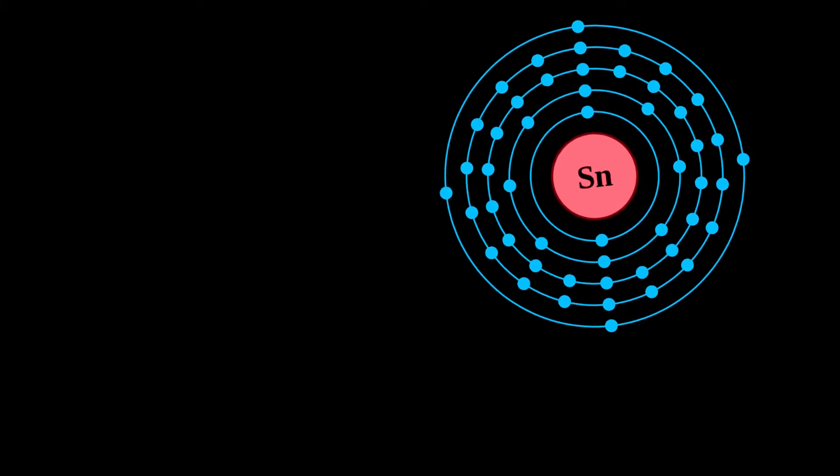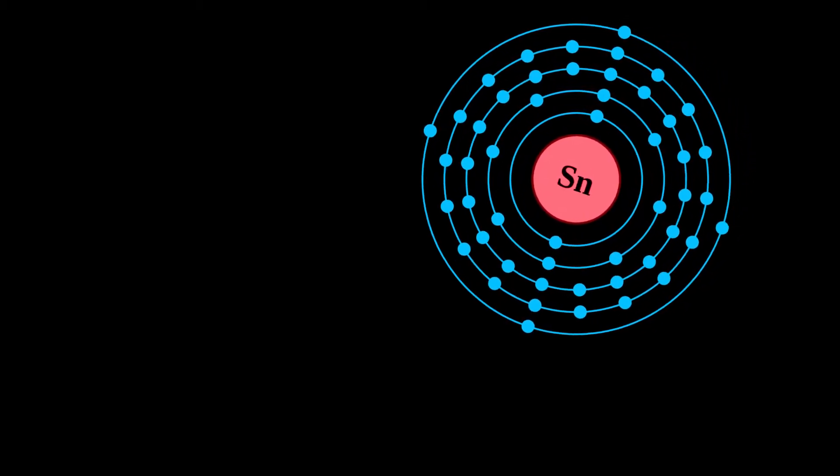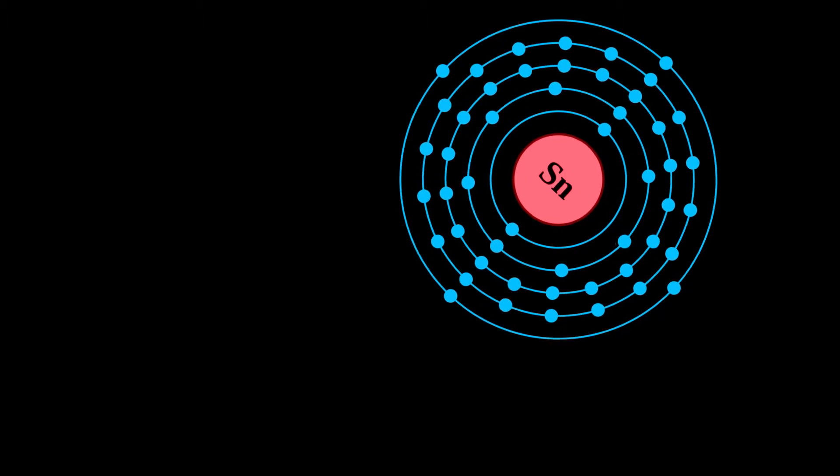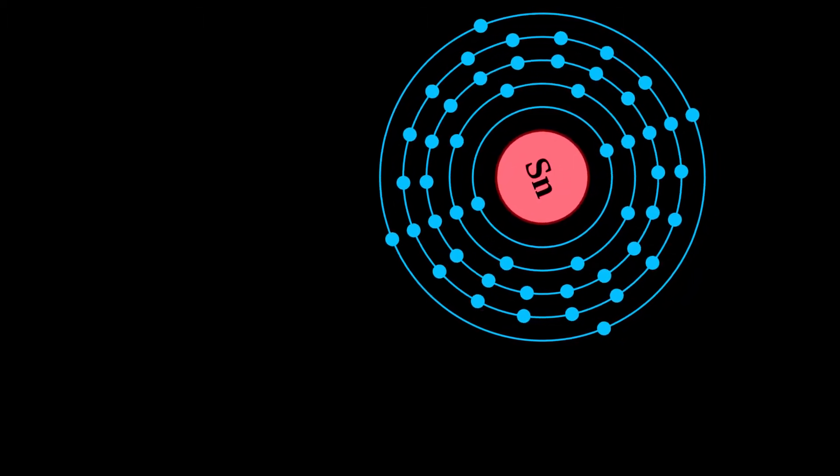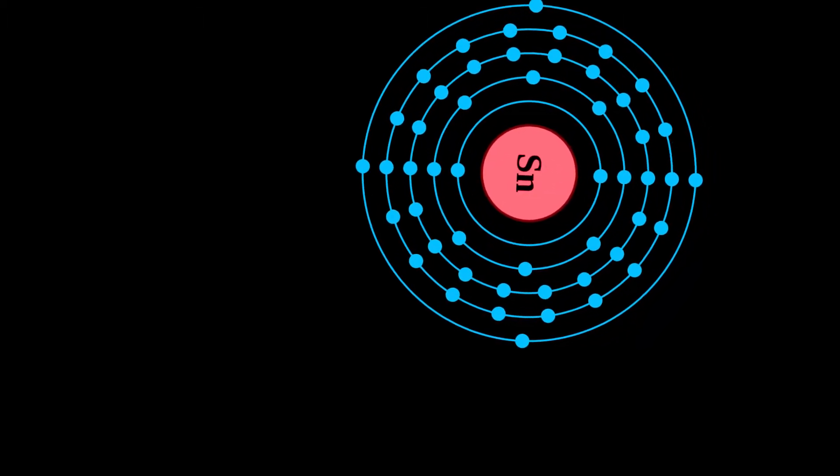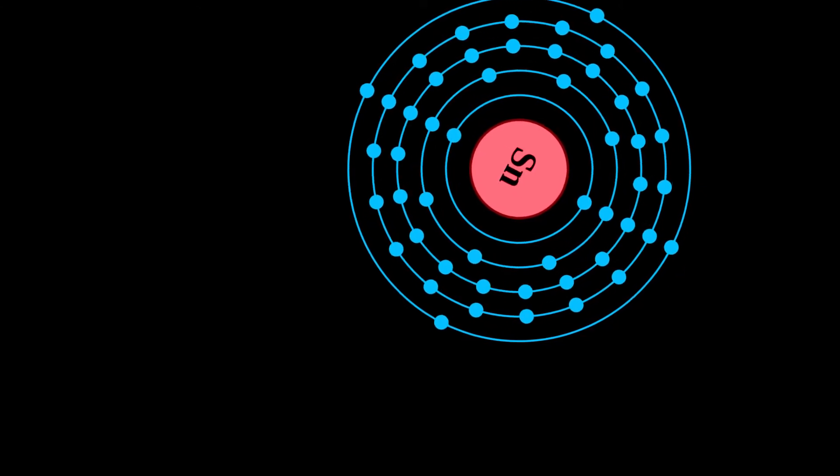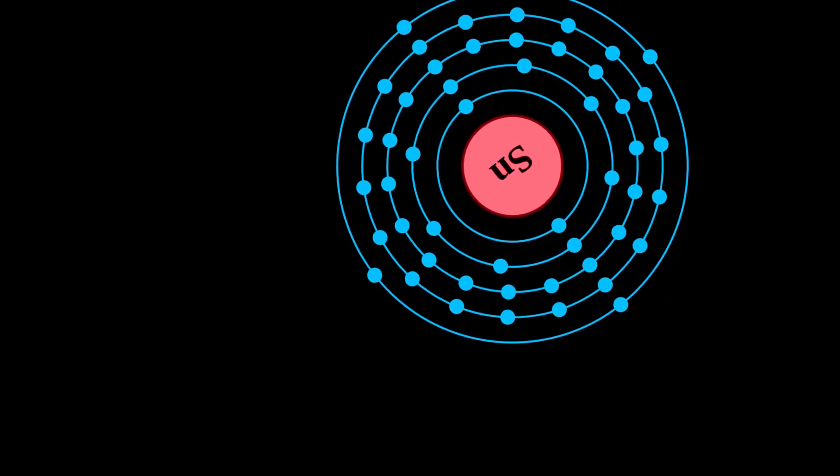In modern times, tin is used in many alloys, most notably tin-lead soft solders, which are typically 60% or more tin, and in the manufacture of transparent, electrically conducting films of indium tin oxide in optoelectronic applications.